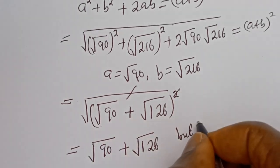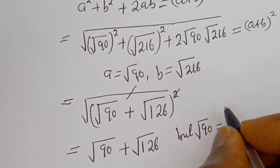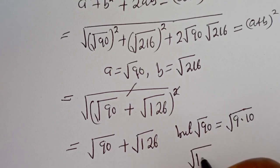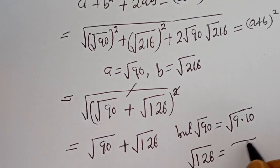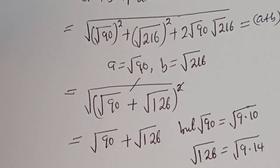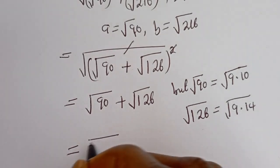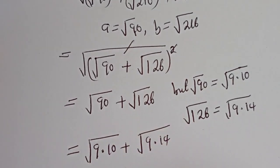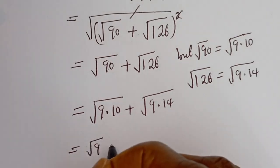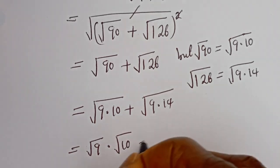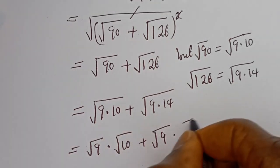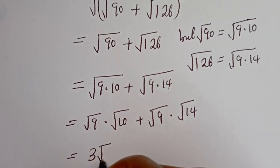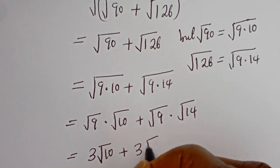Now, square root of 90 equals square root of 9 multiplied by 10, and square root of 126 equals square root of 9 multiplied by 14. Then this equals square root of 9 times square root of 10 plus square root of 9 times square root of 14. So this equals 3 times root 10 plus 3 times root 14.